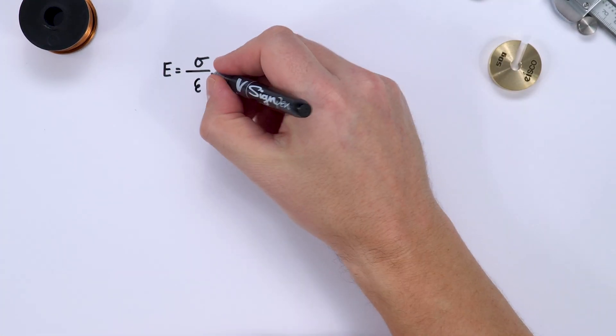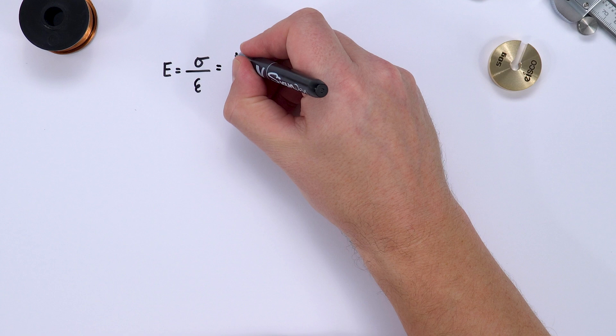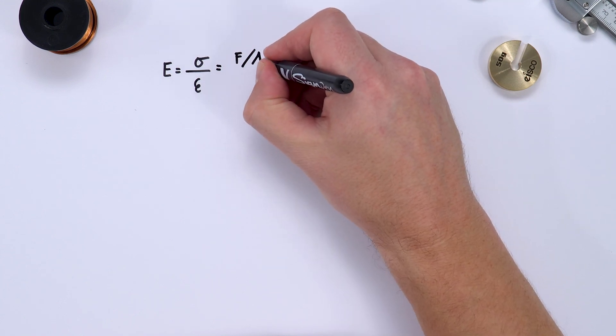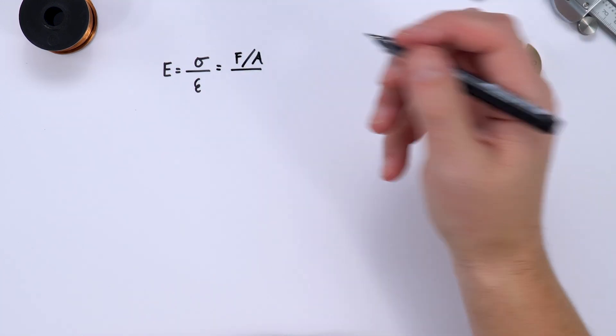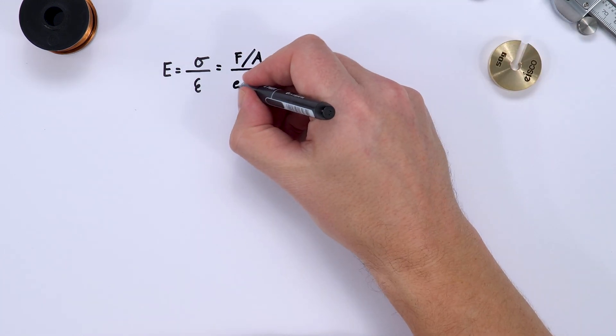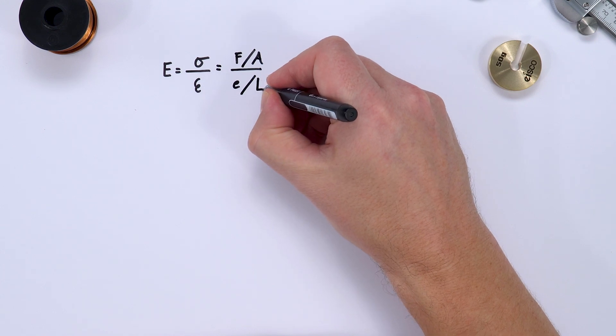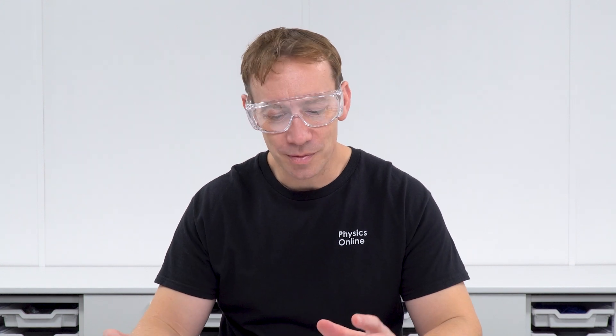Stress is equal to the force applied divided by the area, and strain is equal to the extension divided by the original length. I'm going to use the letter E to represent the extension — some exam boards use delta L, delta X, or just X — but the underlying physics is always exactly the same.